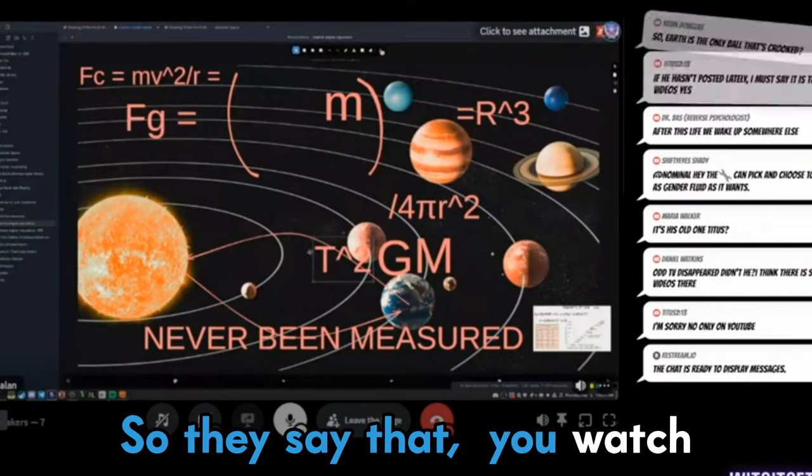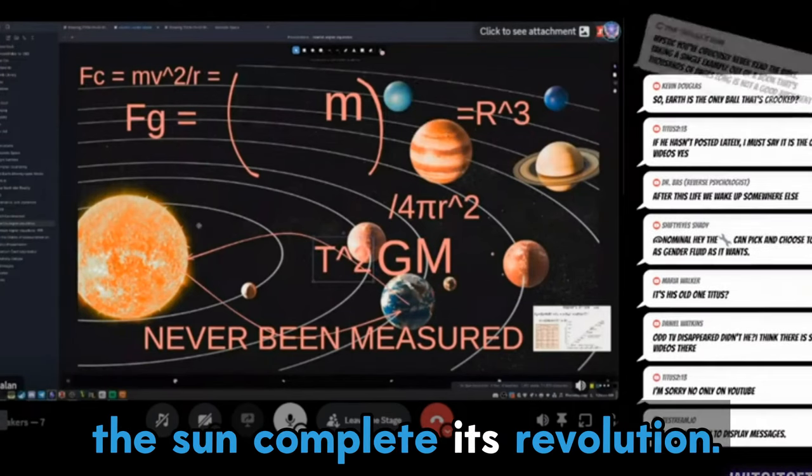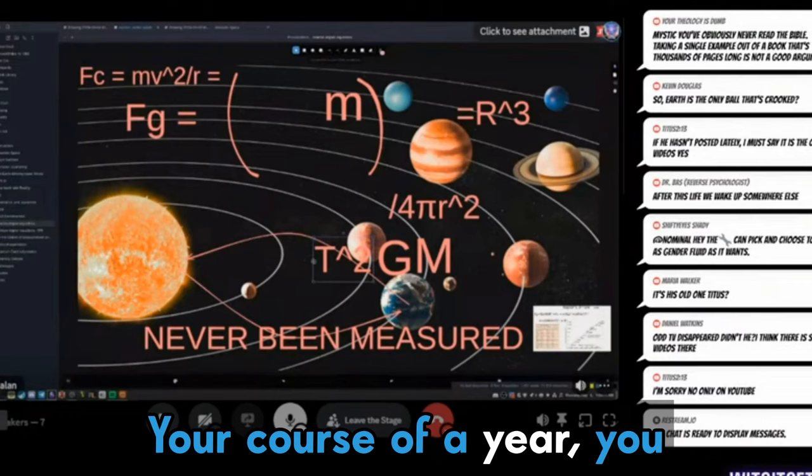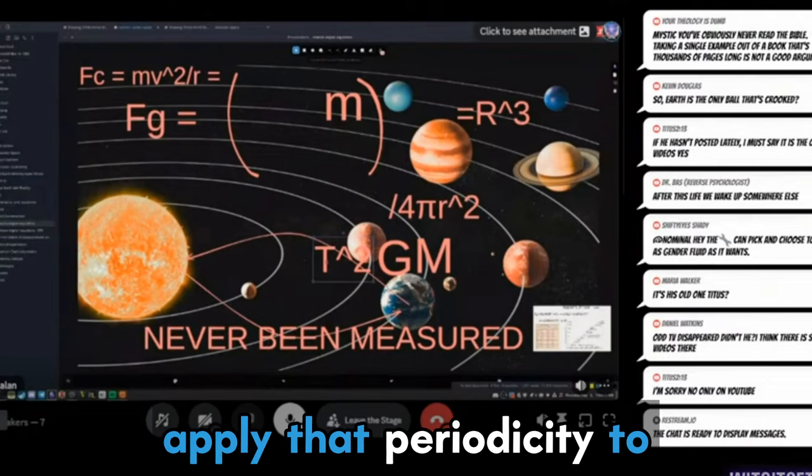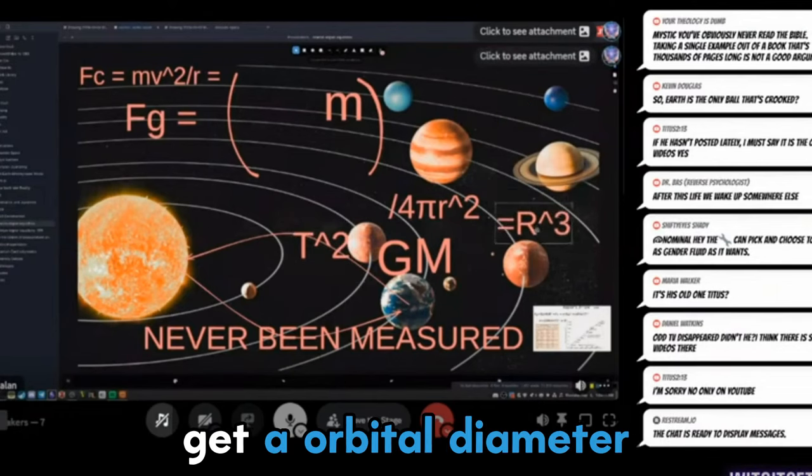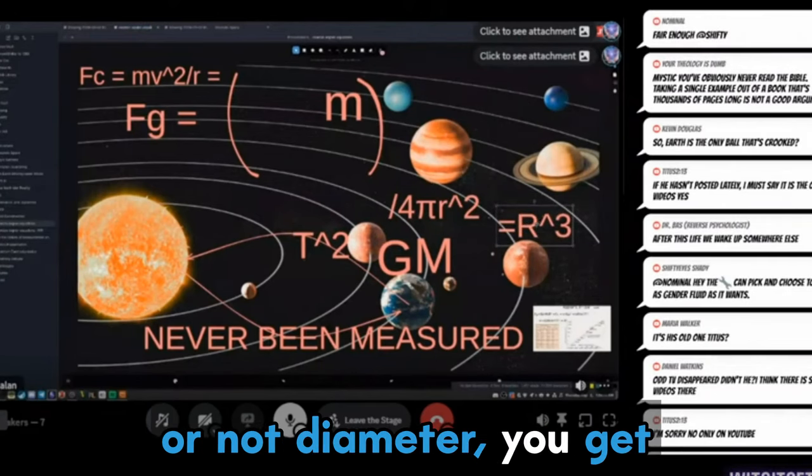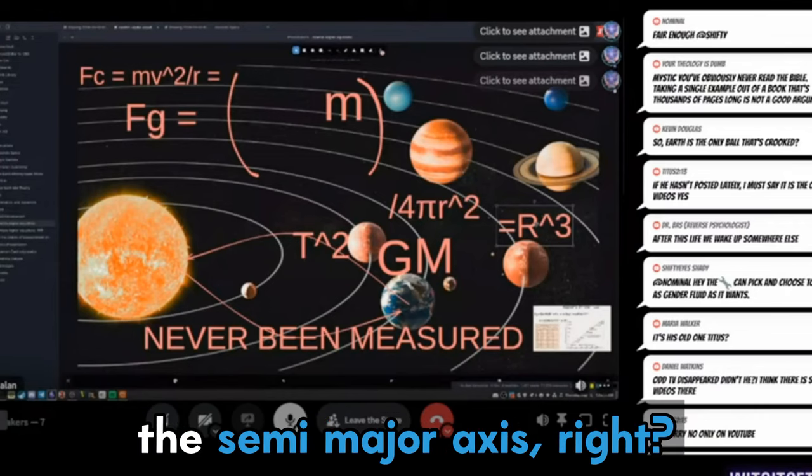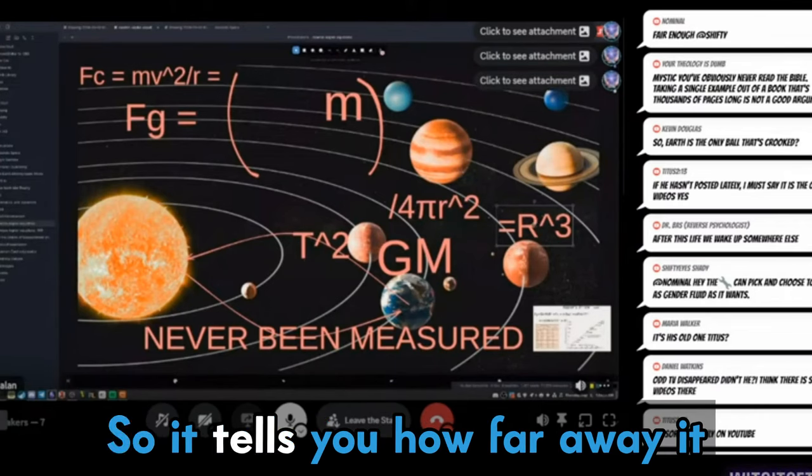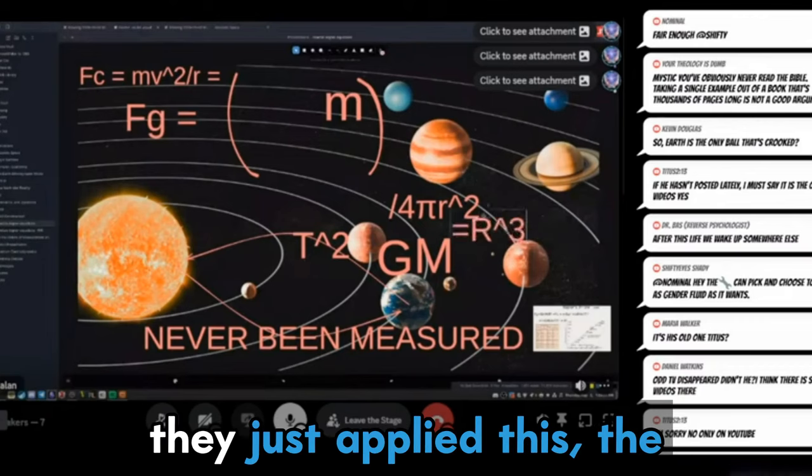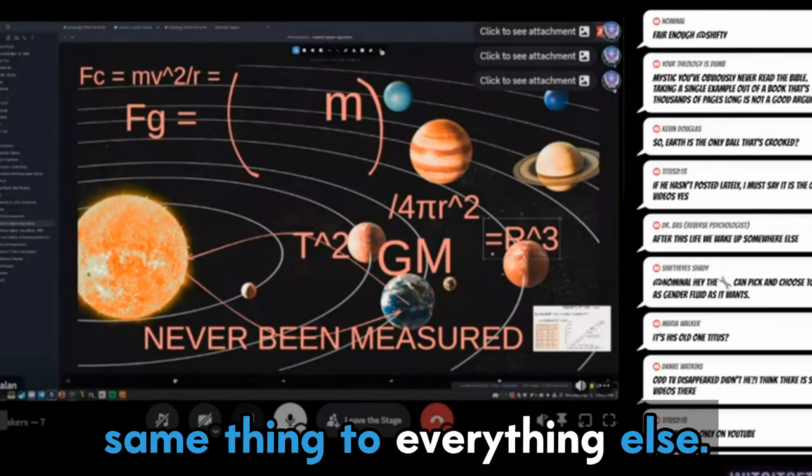So they say that you watch the sun complete its revolution, right, the course of a year. You apply that periodicity to these equations and you get an orbital diameter of 93 million miles on the semi-major axis, right? So it tells you how far away it is based off of that.